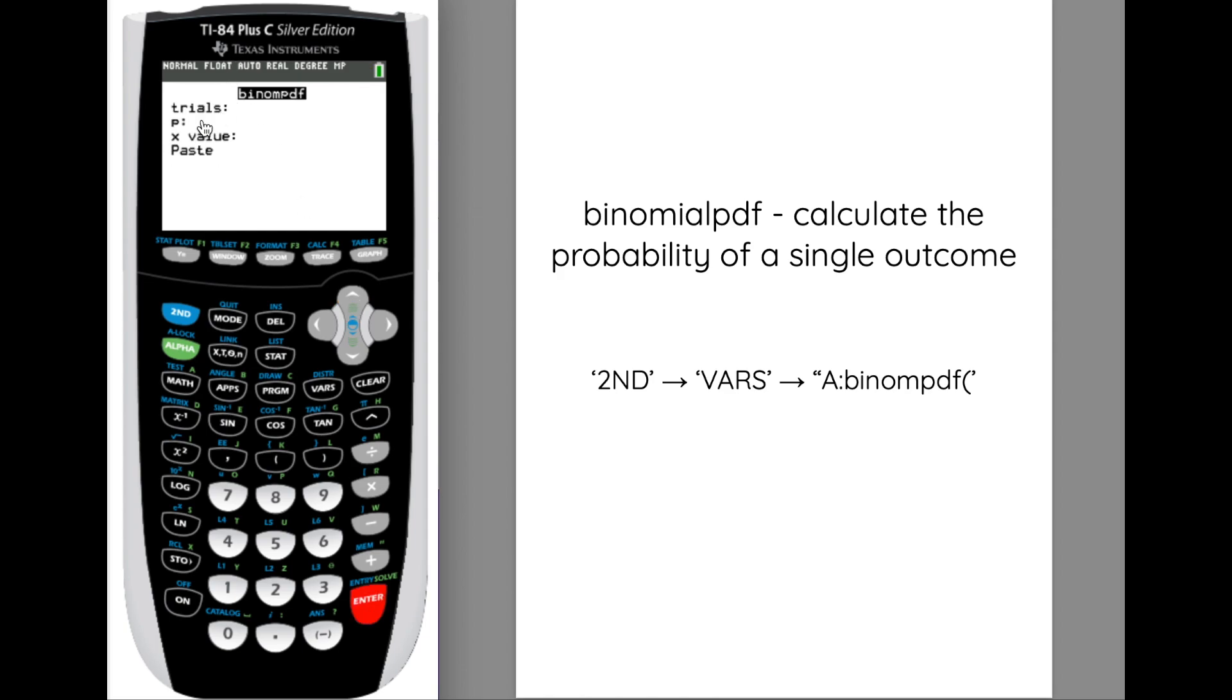It gives us three values that it's looking for: the trials, which is the number of trials; P is the probability and it has to be written as a decimal; and then the X value, that's the particular value you're looking for.